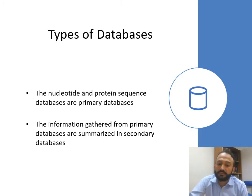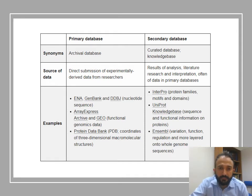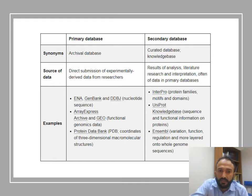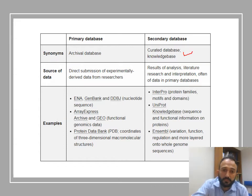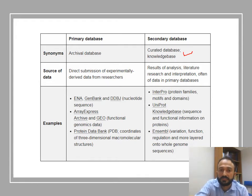There are many primary databases — also called archival databases — where information is directly stored. From that first source, curated knowledge is placed into secondary databases. For example, in the primary database we have a protein sequence, and from that sequence we find motifs; that motif as knowledge is then stored in the secondary database.